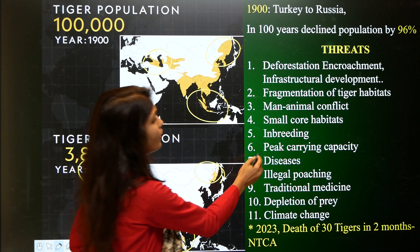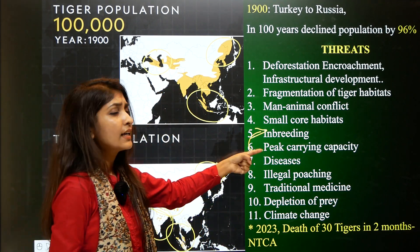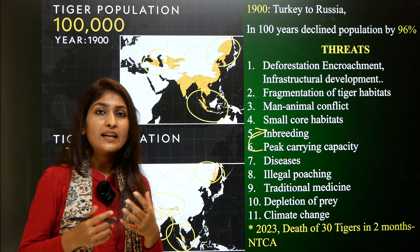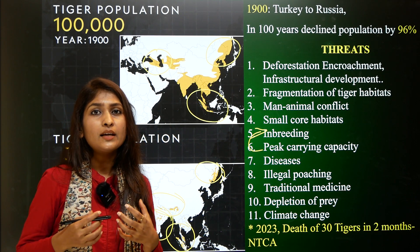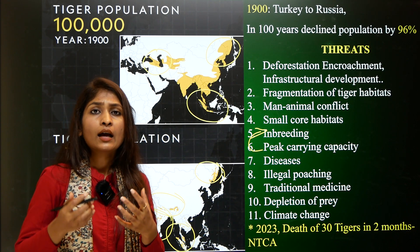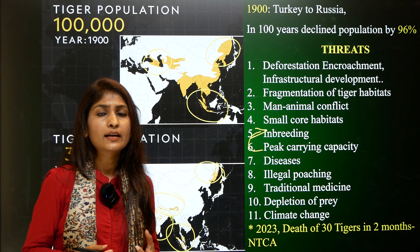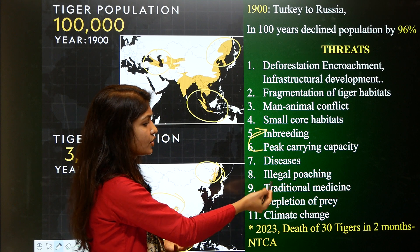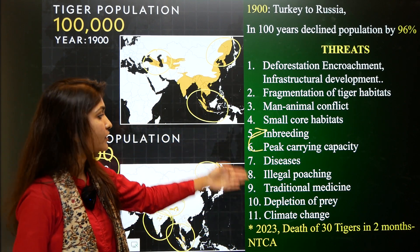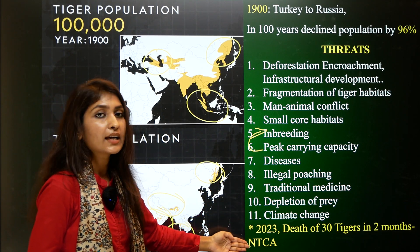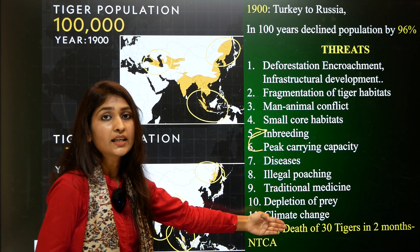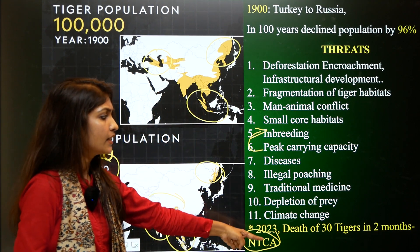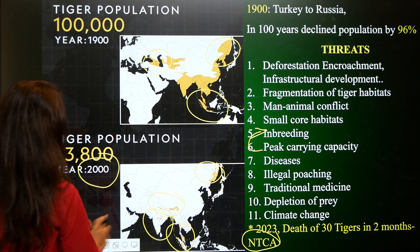In 2023, the National Tiger Conservation Authority reported the death of 30 tigers in the span of two months alone — not a small number. Now that we have understood the extinction pattern, there are 13 tiger range countries where tigers can be found today, centered in the Indian subcontinent, the Sumatran region of Southeast Asia, and the Siberian region.